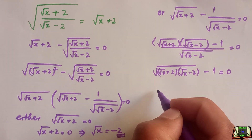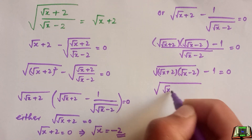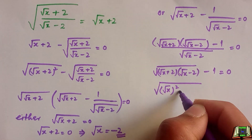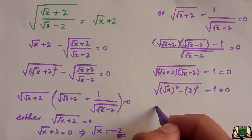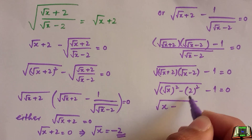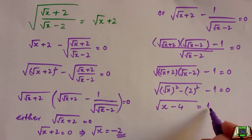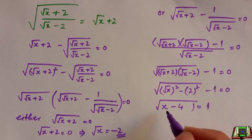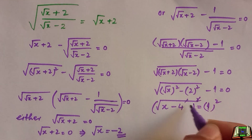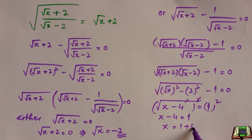This becomes a plus b times a minus b, which equals a squared minus b squared. So we get the square root of (x squared minus 2 squared), all under one root, minus one equals zero. The square and root cancel out, giving x minus 4. Moving the constant to the right hand side, we get the square root of (x minus 4) equals one. Squaring both sides, x minus 4 equals 1.